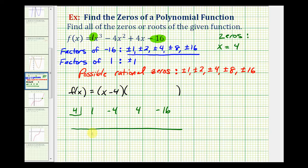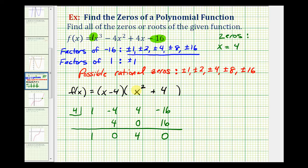So to perform synthetic division now, we bring the one down, multiply by four — four times one is four. We add, this is zero. Multiply by four — zero times four is zero. We add, multiply by four — four times four is sixteen. And our remainder is zero, which is good. So now we've confirmed that four is a zero of the function algebraically as well as graphically. The results of this also gives us the remaining factor of our polynomial function. We started with the degree three polynomial, we divided by a degree one polynomial, therefore our quotient would be a degree two polynomial. This is the coefficient of the x squared term, so our factor is x squared plus zero x, which we can leave out, plus four. So these are the two factors of the original polynomial.